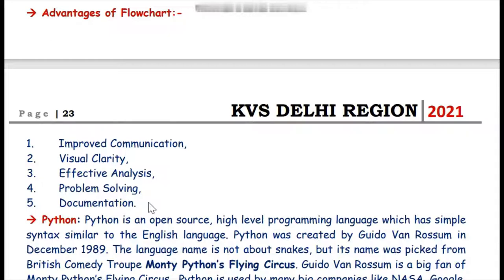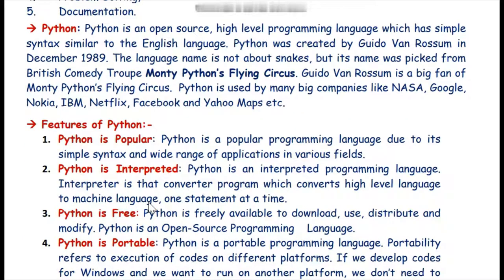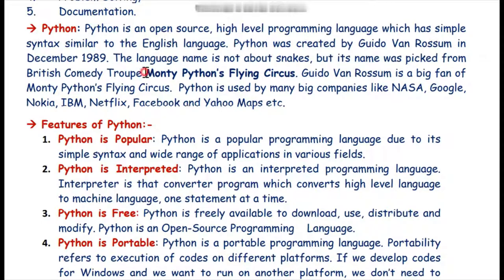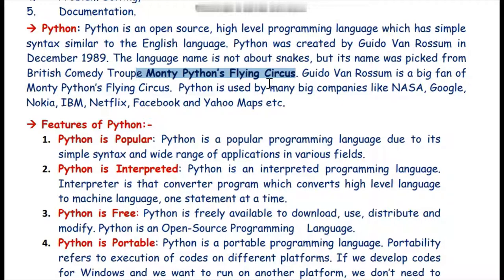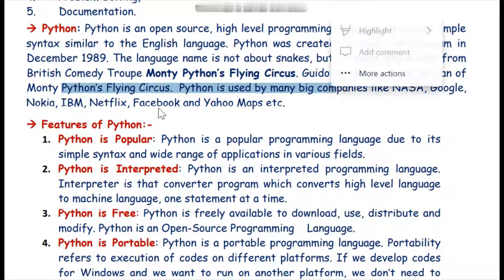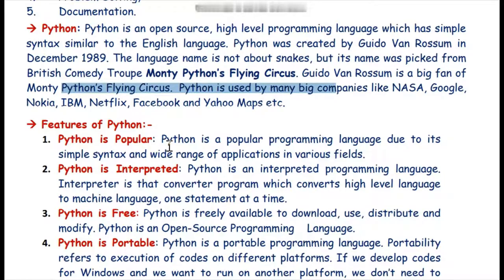As we are working in Python — which is a very easy, free, and open-source programming language — we need to understand its features. Python was created by Guido van Rossum in December 1989. The language name is not about snakes; it was picked from the British comedy show Monty Python's Flying Circus, of which Guido van Rossum is a big fan. Python is used by many big companies like NASA, Google, Nokia, IBM, Netflix, Facebook, Yahoo Maps, and more.